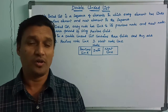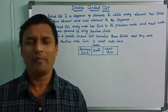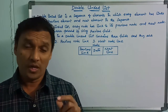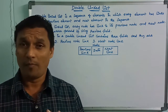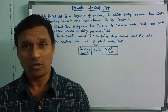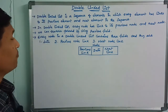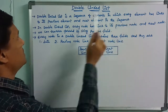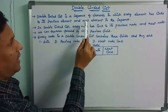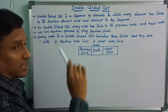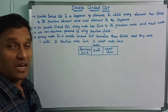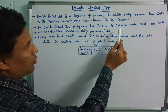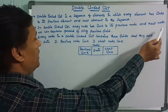I will give you a clear explanation. Now, in this case, double linked list is a sequence of elements in which every element has links to its previous element and next element in this sequence. In double linked list, every node has links to its previous node and next node.